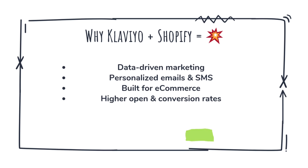Klaviyo is a marketing automation platform designed specifically for e-commerce businesses. What makes it so powerful is how deeply it integrates with platforms like Shopify. Unlike other email tools, Klaviyo automatically syncs with your store's customer and order data, meaning it tracks everything from website browsing activity to purchase behavior. Every email or SMS can be tailored based on what your customers do — whether they browse a product, abandon their cart, or place an order. And because Klaviyo collects all this data in real-time, your marketing becomes smarter.